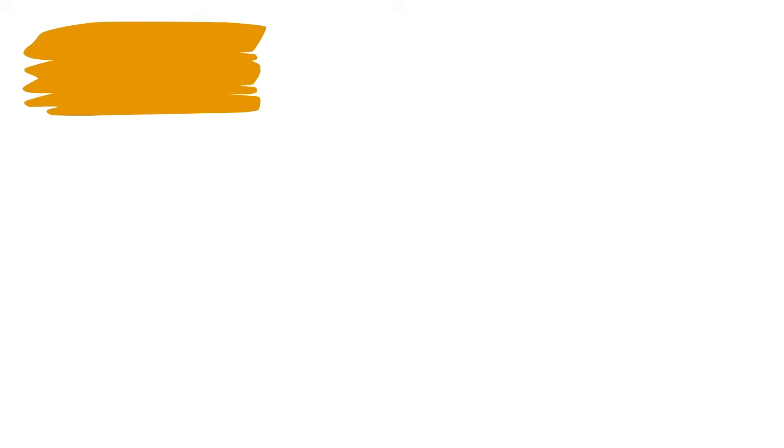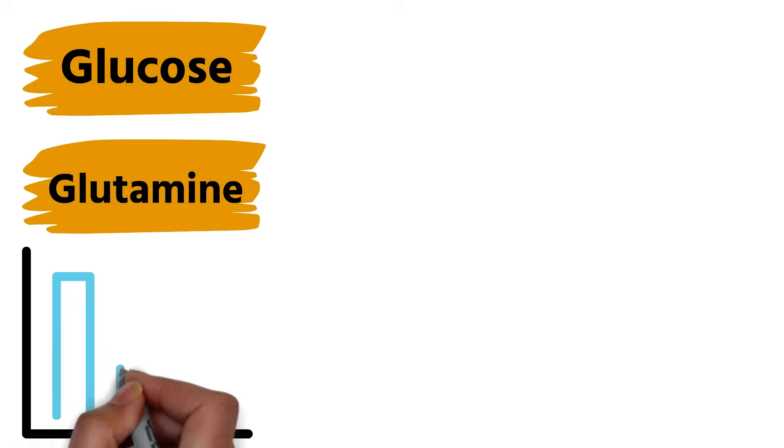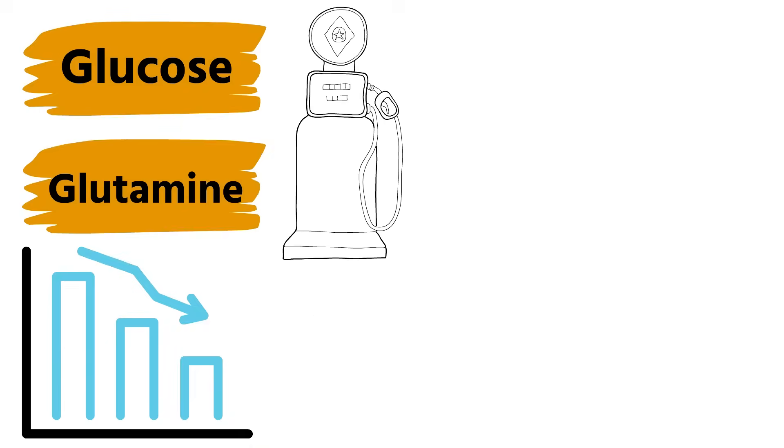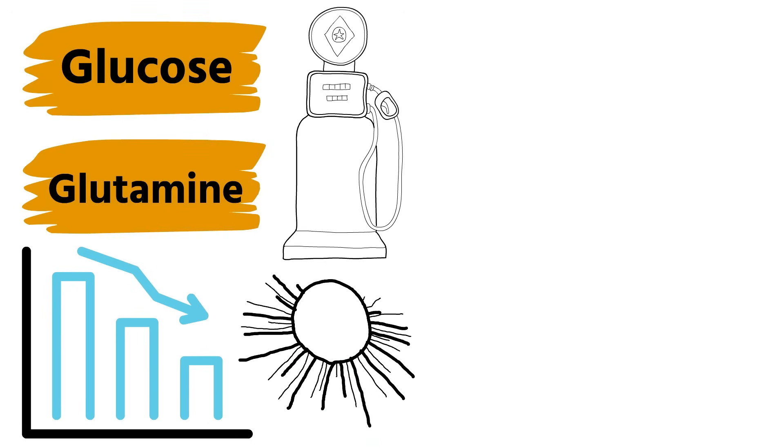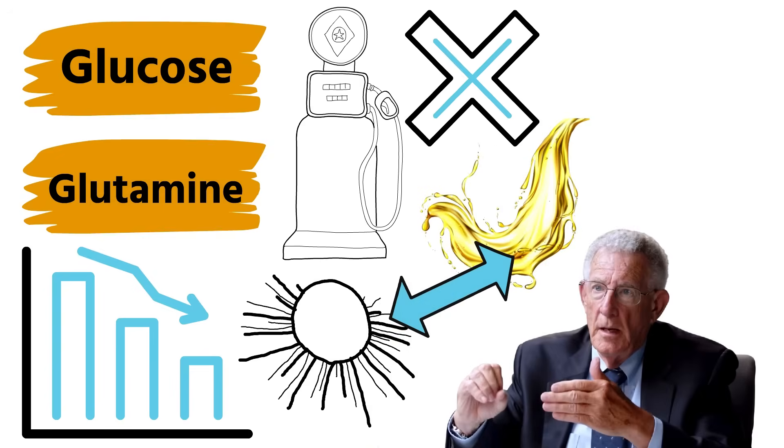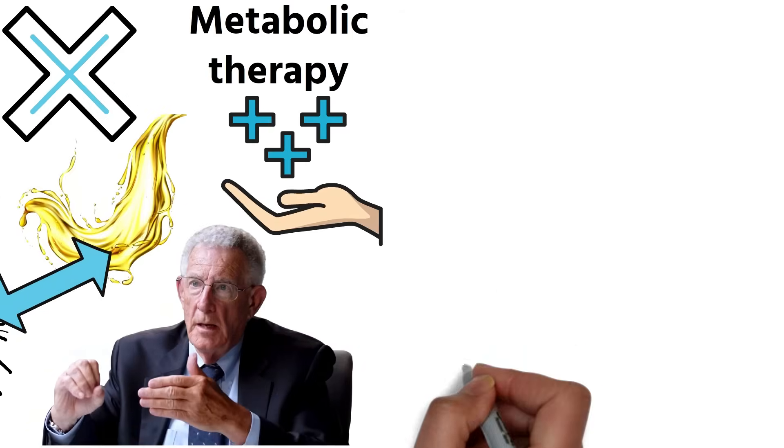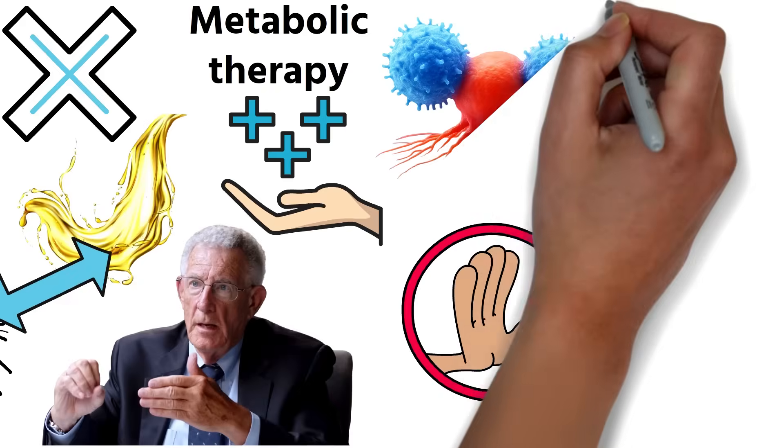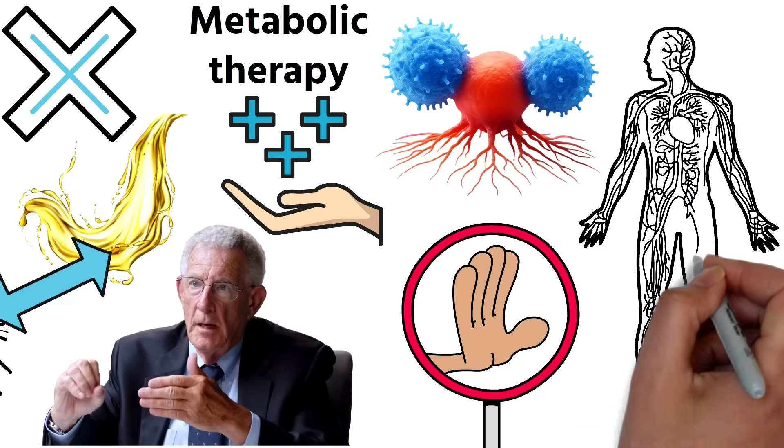The fermentation process is fueled by two main sources, glucose and glutamine. Reducing these fuels in the diet can help slow cancer's growth. Professor Seyfried explains that cancer cells cannot use fat for fuel. This is the foundation of metabolic therapy, an approach that not only helps prevent cancer from developing, but also supports the body's ability to fight it.